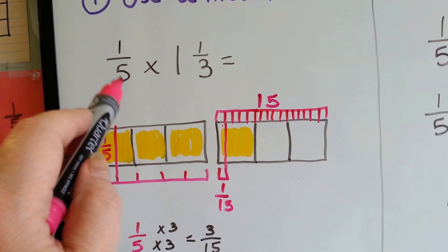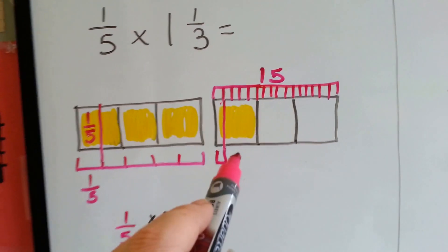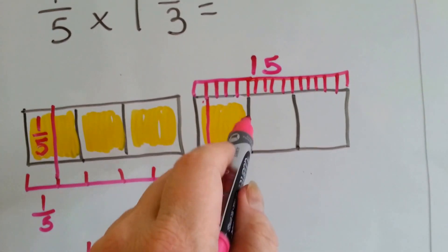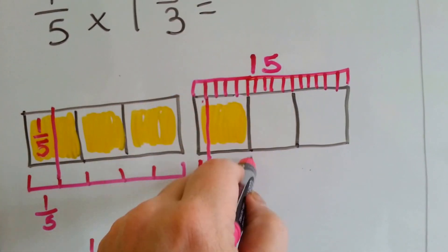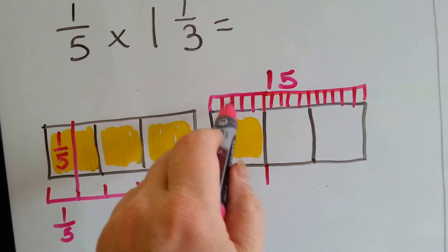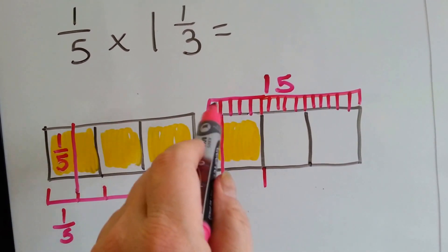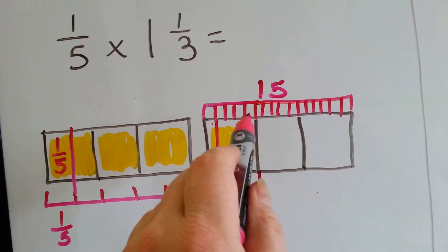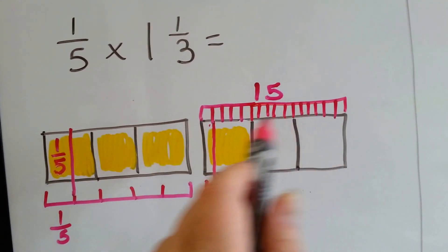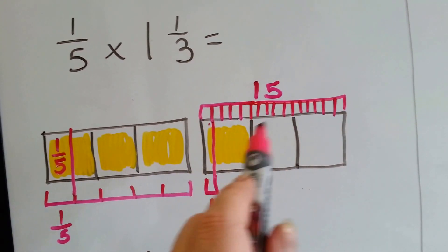Now I need to split it into fifths. So I split this one into 5 pieces. This one yellow one right here is split into little five pieces. If I do it to the whole thing, I get 15. See, 5, 10, 15.